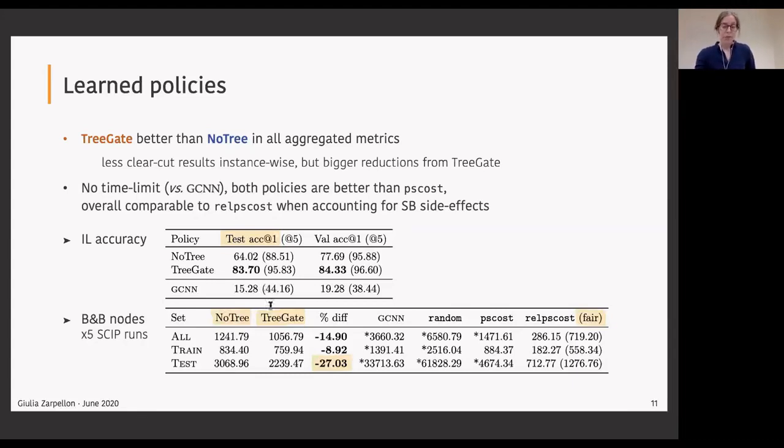In terms of branch and bound nodes, again the TreeGate architecture, when restricted to the test instances, produces trees that are on average with 27% less nodes than our other model that only uses the representation of the candidate variables. In terms of solving instances, both our policies are able to solve all the instances like SCIP default and do not hit time limit, which is a thing that the GCNN method does. It fails to solve most test instances.